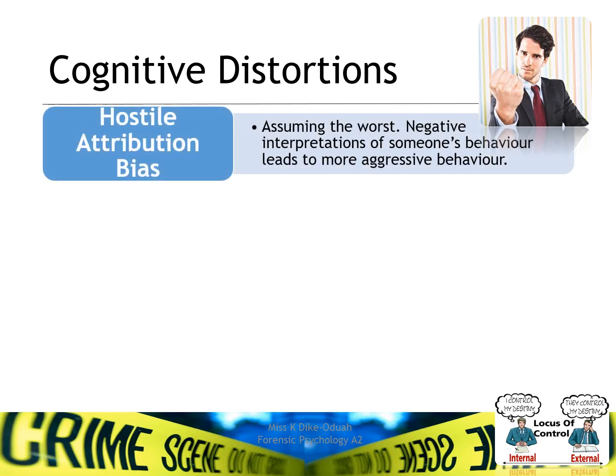The first cognitive distortion is hostile attribution bias. This is when an individual has a tendency to assume the worst — they have negative interpretations of others' behaviour, which in turn may lead them to respond in an aggressive way.